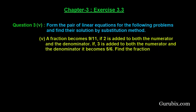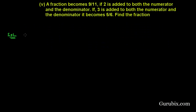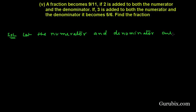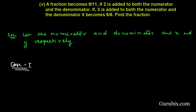Let us see how to solve this question. Let the numerator and denominator be x and y respectively. In case 1, we are given that if we add 2 to both the numerator and denominator — so if we add 2 in x and 2 in y.